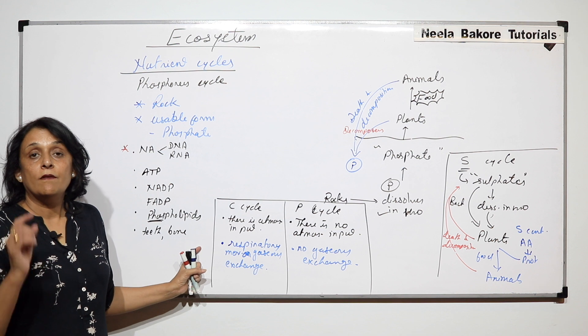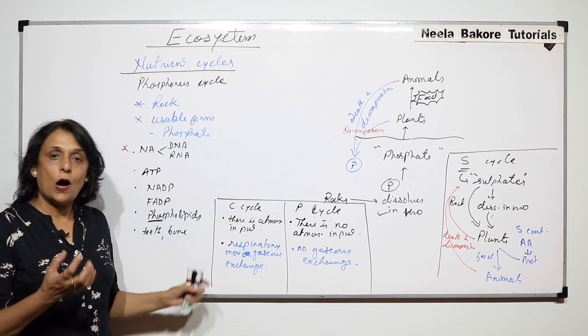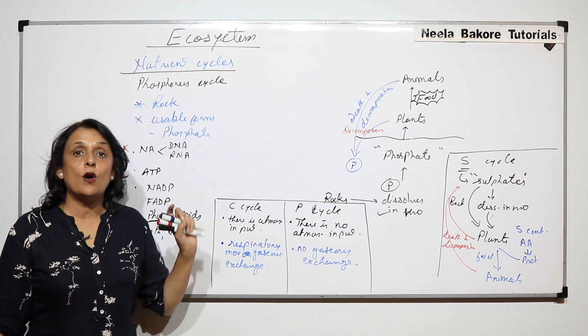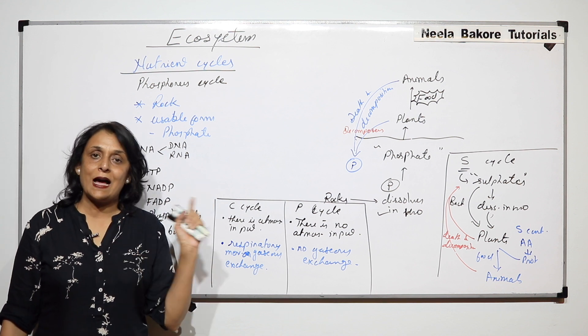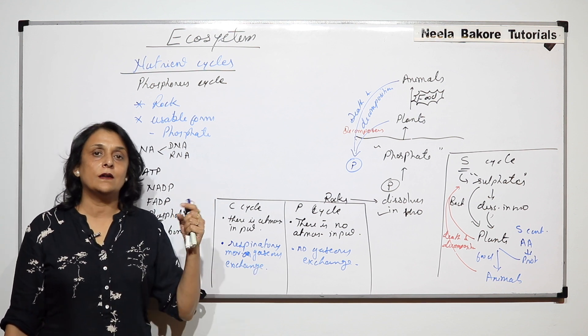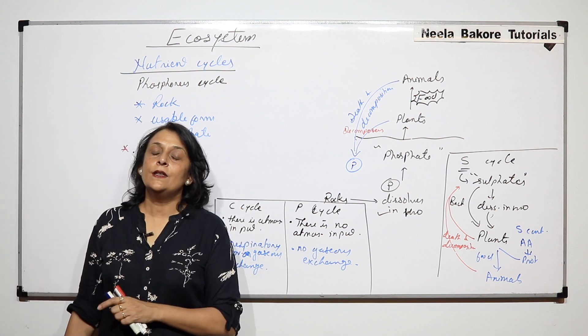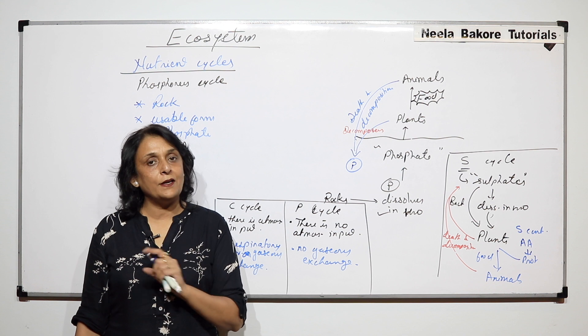So where we need it, how we get it, and how it moves - we have talked of three elements so far: carbon cycle in the previous video and here phosphorus and sulfur. In the next part we will talk about nitrogen cycle.